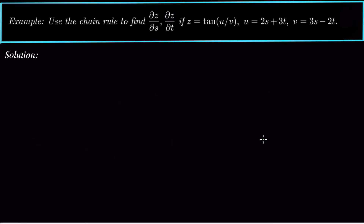Hey guys, what's up? We're looking at finding the partial derivatives ∂z/∂s and ∂z/∂t of a function, but we have to use the multivariable chain rule to do that. The function we want to differentiate is z = tan(u/v), but u is a function of s and t, and v is a function of s and t, so we want to know how we're going to find these derivatives.